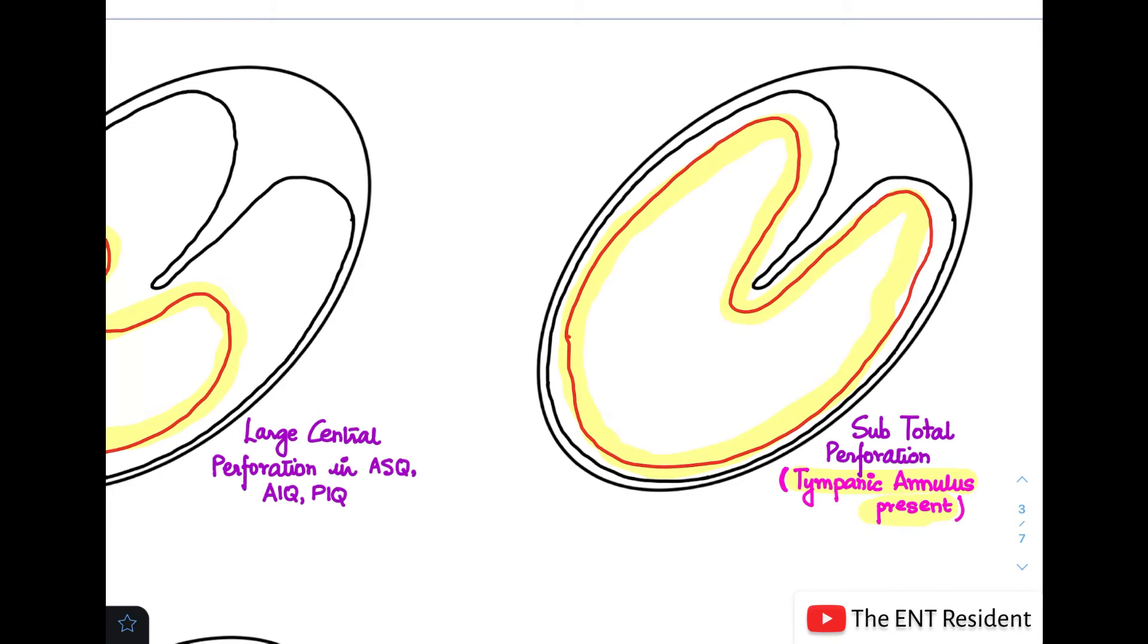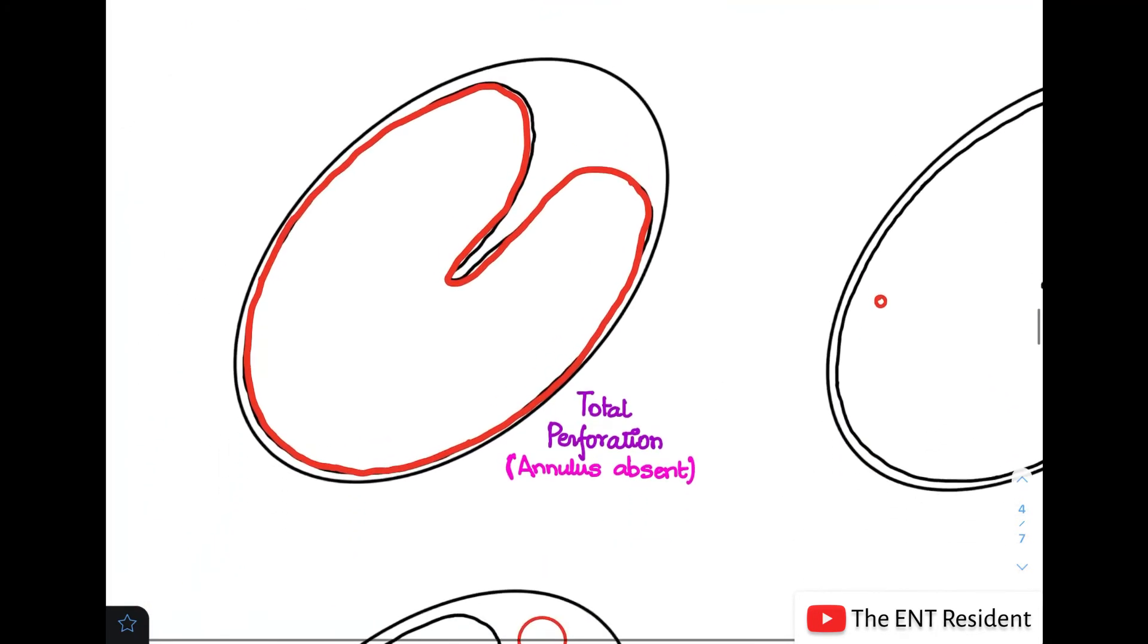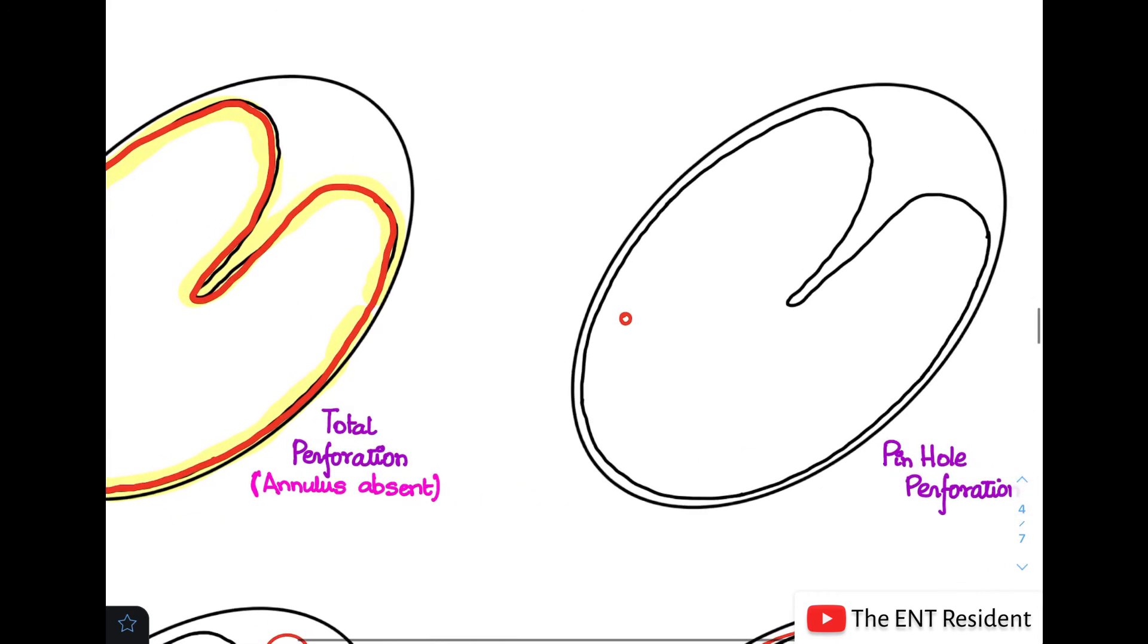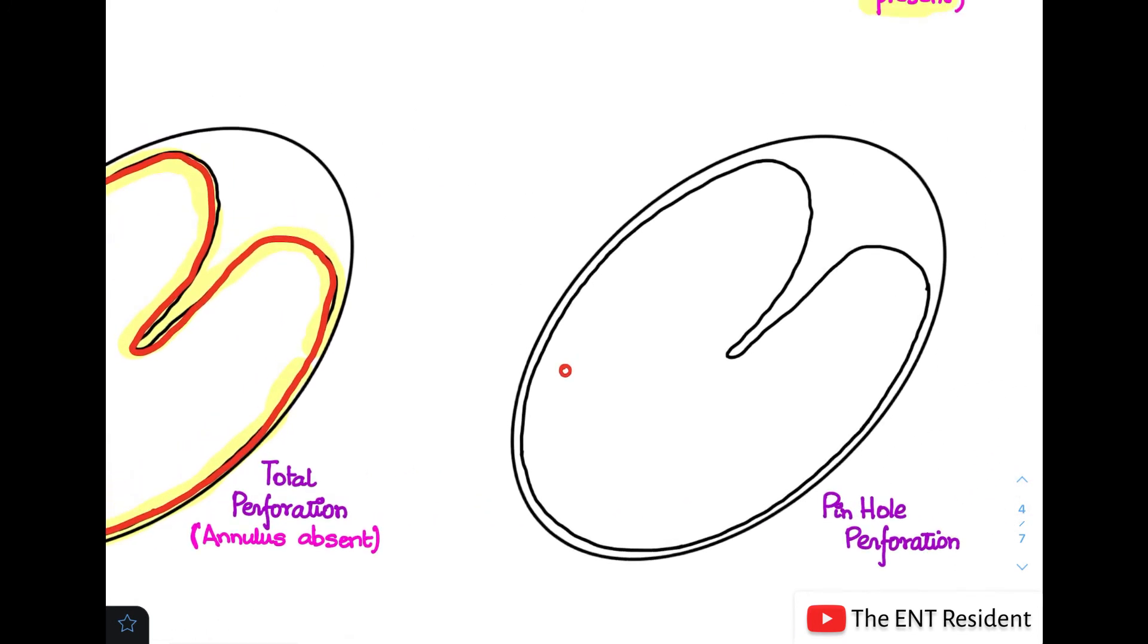However, in the total perforation, as you can see in this picture over here, the tympanic annulus is absent. So this is how you differentiate between total and subtotal perforation. And also, sometimes we end up seeing a pinhole perforation, so all you need to do is make a little circle wherever you have noted the pinhole perforation.